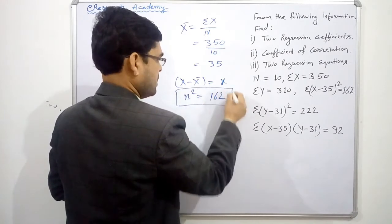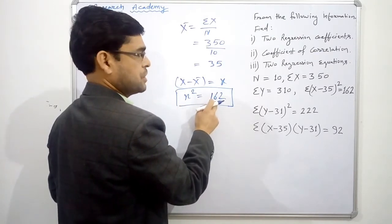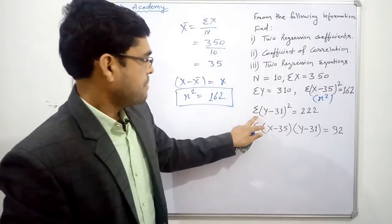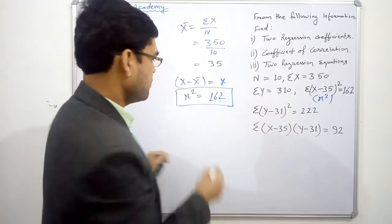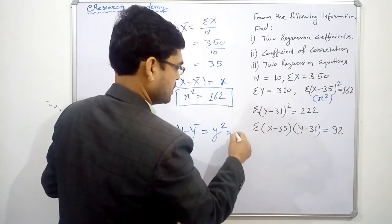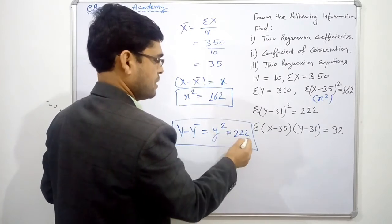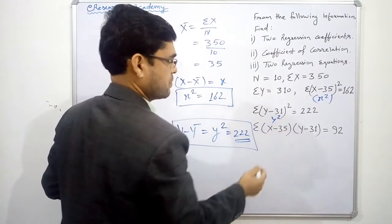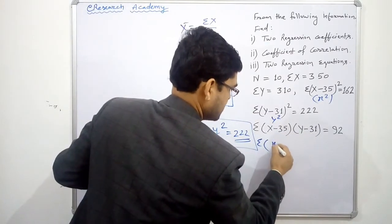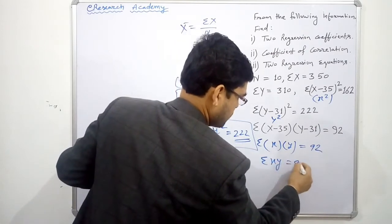So if we need to use sigma x squared anywhere, we will use 162. Then we have summation of (y minus 31) squared — y-bar is 31, so (y minus y-bar) is the deviation, and the square of that deviation is 222. So sigma y squared equals 222. Then summation of (x minus 35)(y minus 31) — this is summation of xy — equals 92, so sigma xy = 92.